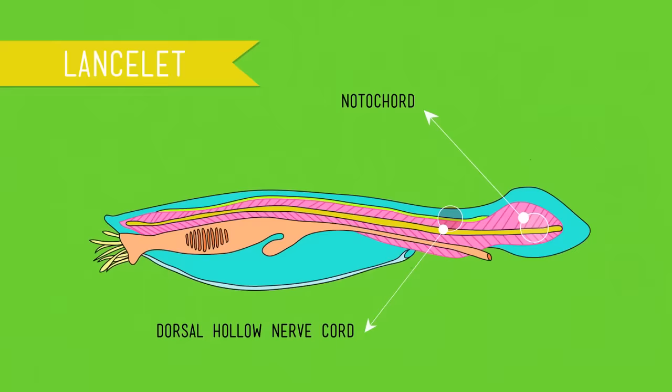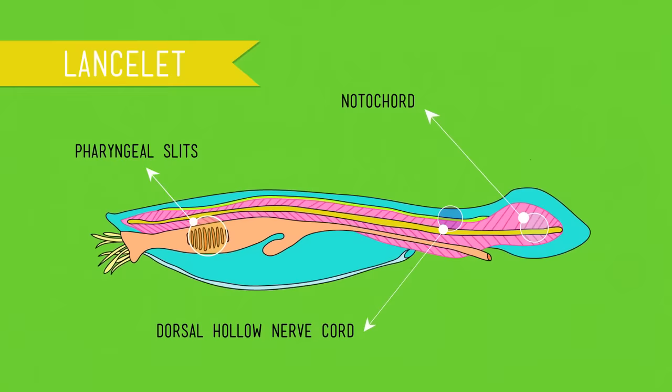And third, all Chordates have pharyngeal slits. In invertebrates like the Lancelet here, they function as filters for feeding. In fish and other aquatic animals, they're gill slits. And in land-dwelling vertebrates like us, they disappear before we're born. But that tissue develops into areas around our jaws, ears, and other structures in the head and neck.